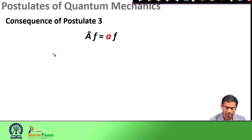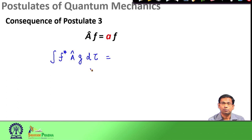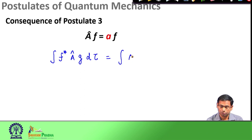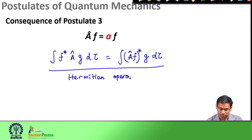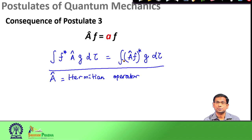The general definition of the Hermitian operator we discussed in our previous lecture is: if I have two well-behaved functions f and g, and the right-hand side is f-star, the complex conjugate of operator A acting on g, another well-behaved function, Hermitian operators would fulfill this equality. This is the condition for which we call any linear operator a Hermitian operator. Operator A satisfies this condition for any f and g as two well-behaved functions.